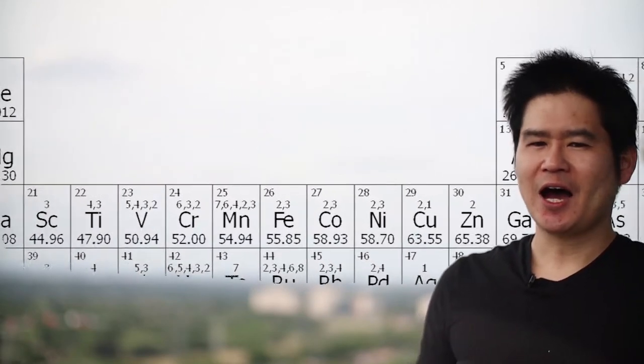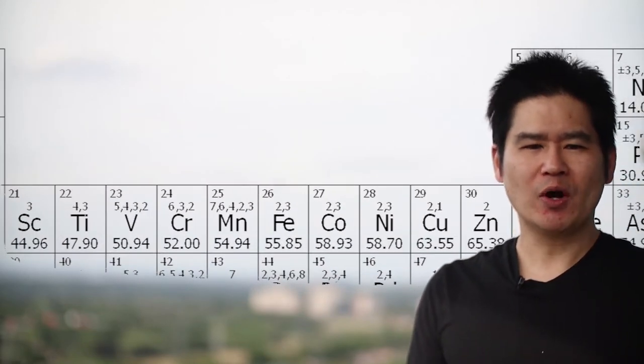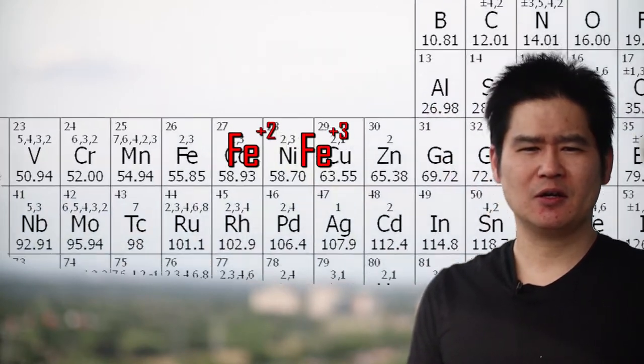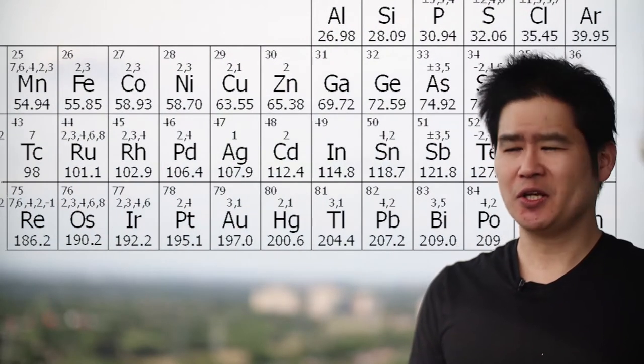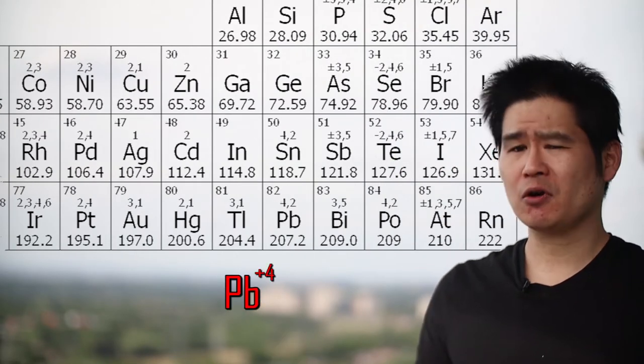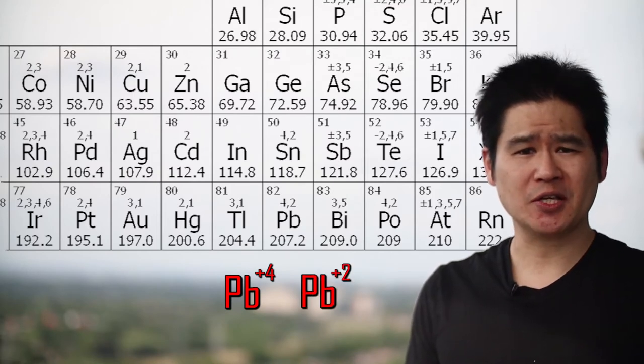For example, iron may end up with two different valence configurations, one with a charge of plus 2 or one with a charge of plus 3. Mercury may end up with a charge of plus 2 or maybe plus 1. Lead may end up with a charge of plus 4 or maybe a charge of just plus 2.